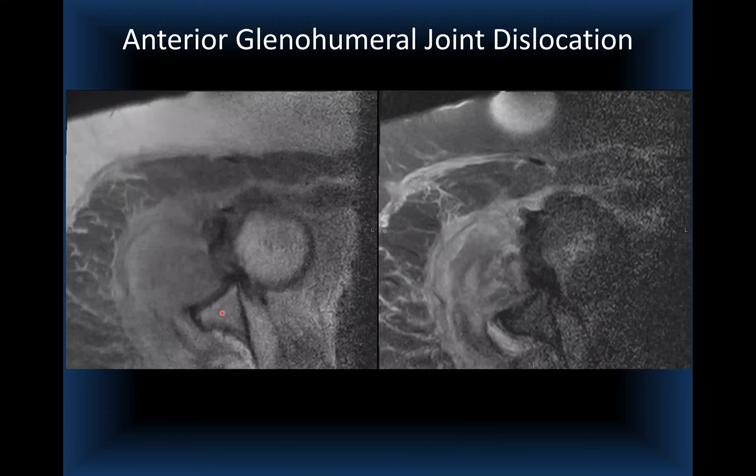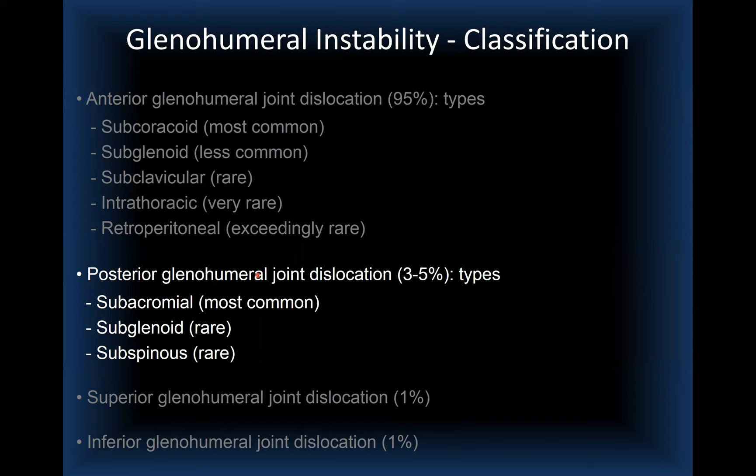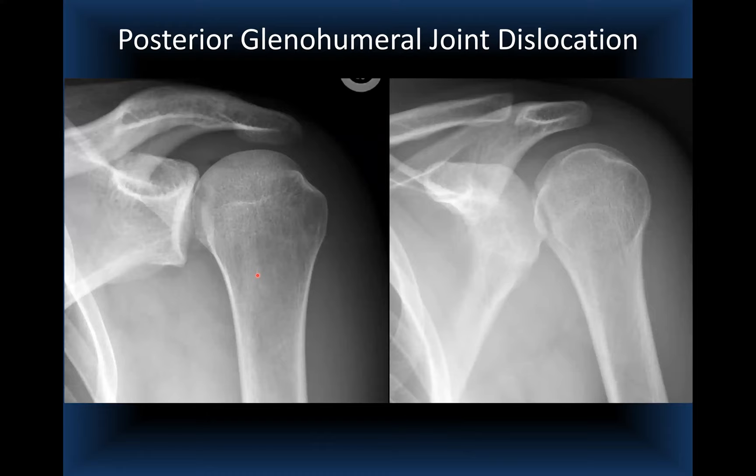On axial images you can see the relationship of the anteriorly dislocated humeral head to the glenoid fossa — an acute anterior dislocation case. For posterior dislocations, the subacromial type is most common. A memorable case from fellowship with Dr. Resnick at UCSD showed fixed internal rotation, a trough sign, and lipohemarthrosis.